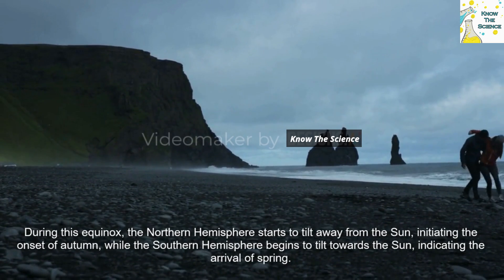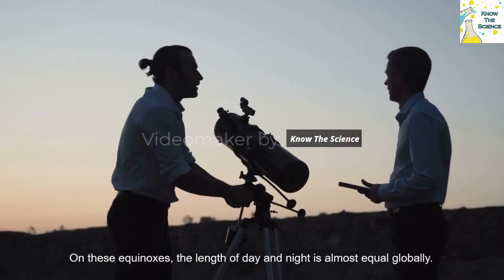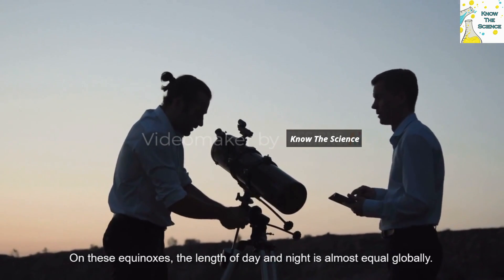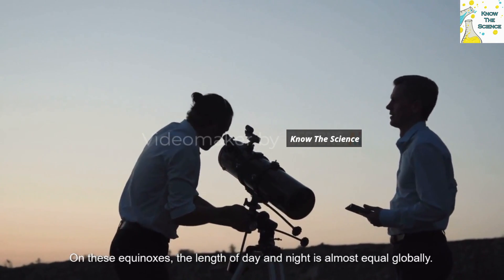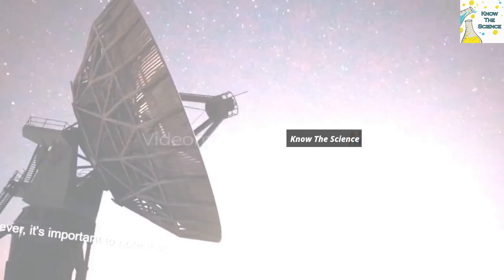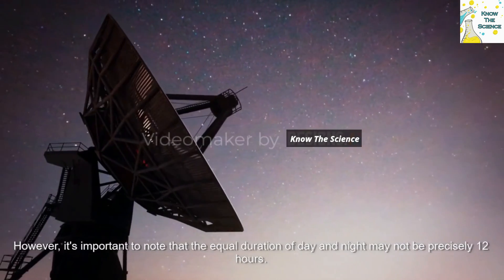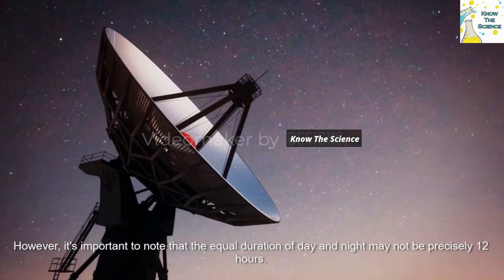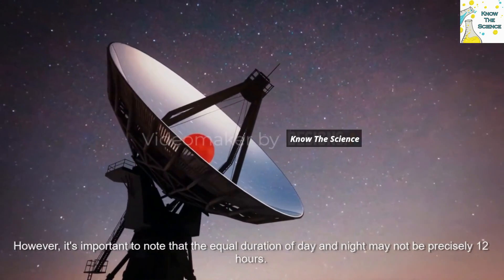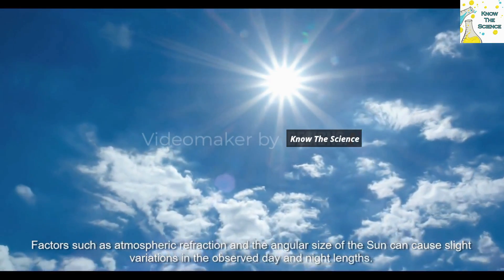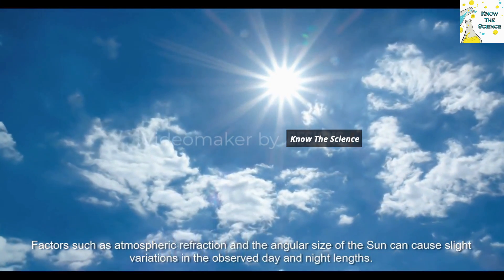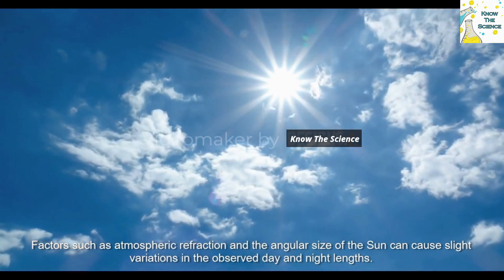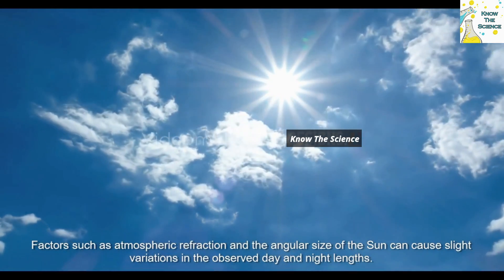On these equinoxes, the length of day and night is almost equal globally. However, it's important to note that the equal duration of day and night may not be precisely 12 hours. Factors such as atmospheric refraction and the angular size of the Sun can cause slight variations in the observed day and night lengths.